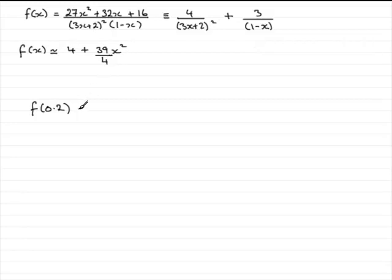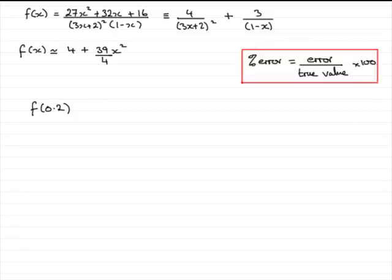How do we work out the error in anything? Well, you should know this equation here. Percentage error in anything is the error compared with the true value and then we need to times it by 100 to turn this fraction to a percentage.